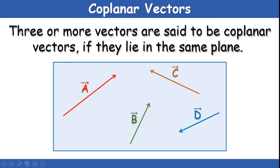Co-planar vectors: vectors which lie in the same plane are called co-planar vectors. If all the vectors are lying in the same plane — sharing the same plane — then we call them co-planar vectors. In this two-dimensional example, vectors A, C, B, and D are all lying in the same plane; hence they are called co-planar vectors.